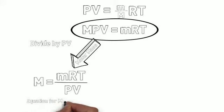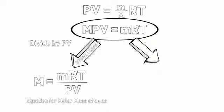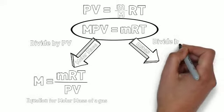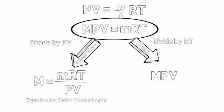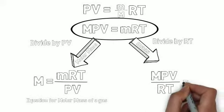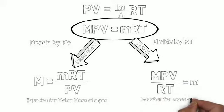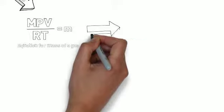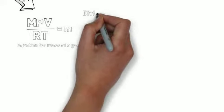If we want to solve for the mass of the gas, we divide both sides of the equation by RT. That gives us capital M times PV divided by RT equals little m. This is our equation for the mass of a gas. We can use this mass equation to solve for density by dividing both sides of the equation by V.